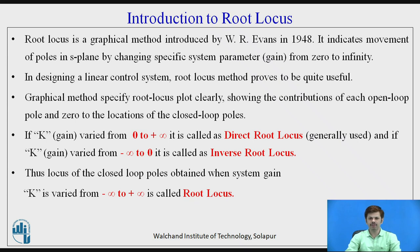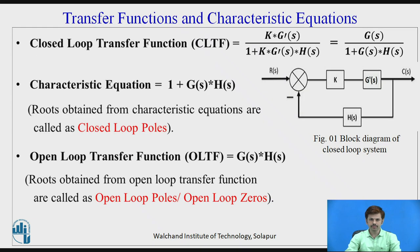If we vary the value of K from minus infinity to 0, it is called as inverse root locus. Thus we can say that the root locus of a closed loop pole obtained when system gain K is varied from minus infinity to plus infinity is called as root locus.